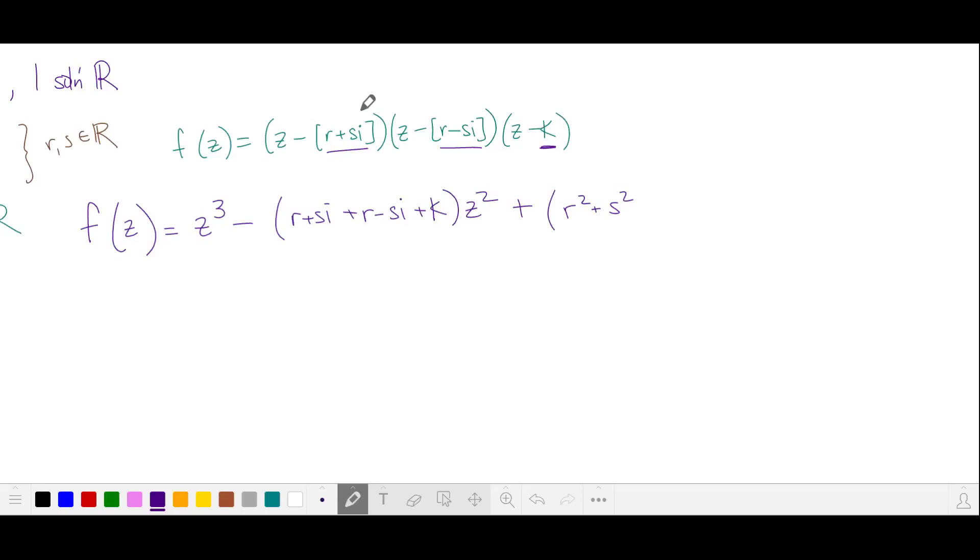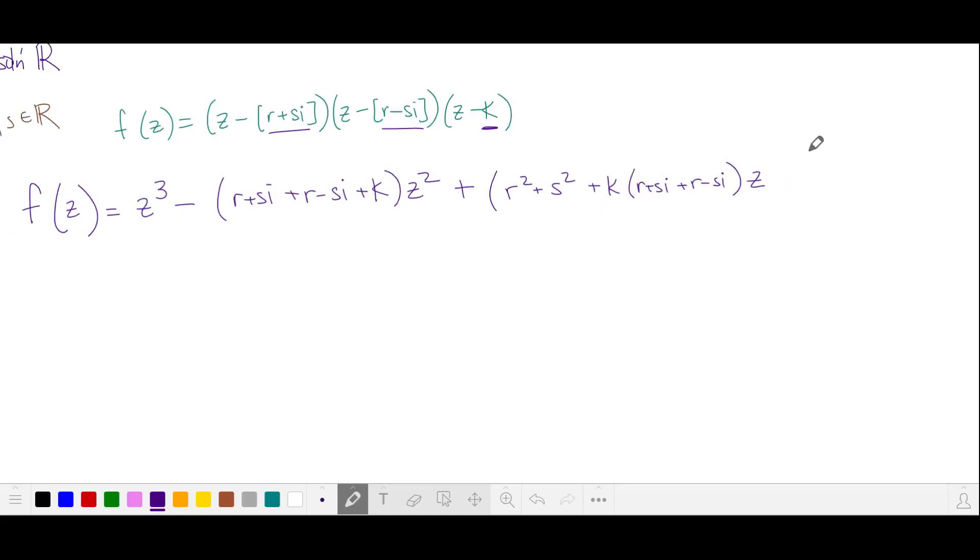So the product of r plus si and r minus si is r squared plus s squared. And then we're going to multiply k by r plus si and r minus si. So I'll just factor that out. That's our coefficient of z. And then we have our constant, which is the product of the roots. That's going to be r squared plus s squared times k.